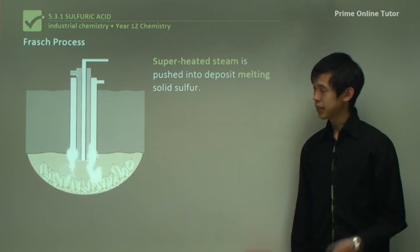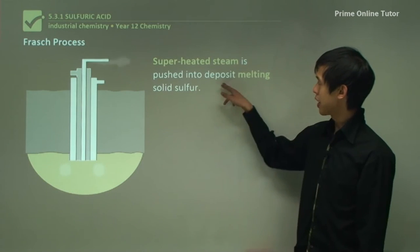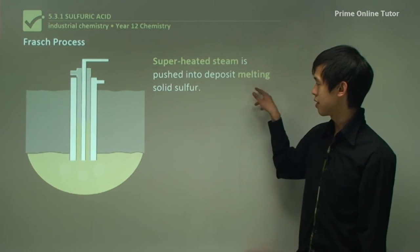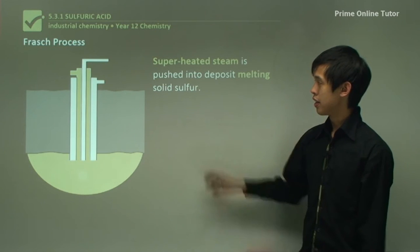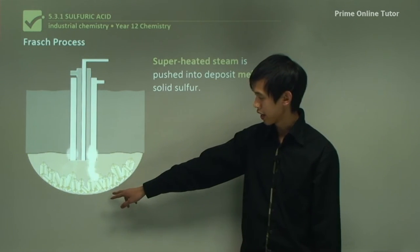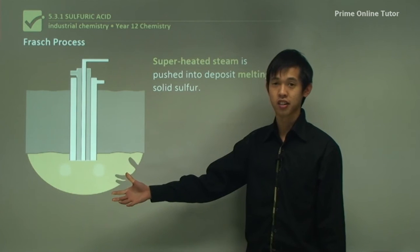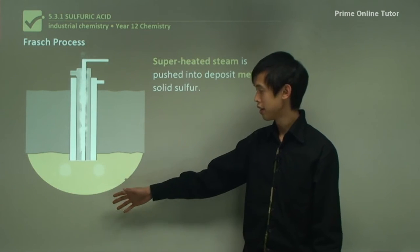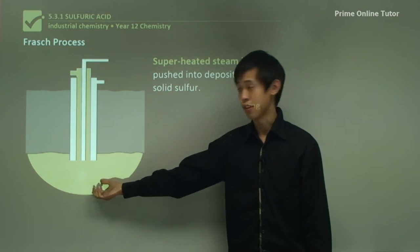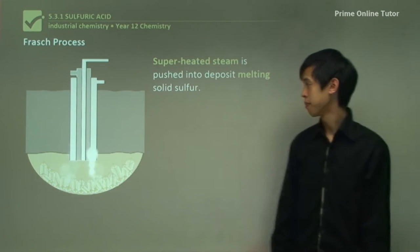So what actually happens: the superheated steam is pushed into the deposit, melting the solid sulfur. You can see there's crystal sulfur in the deposit — the steam hits it, and because it's hotter than the melting point, it will melt the sulfur and you get liquid sulfur in the deposit.